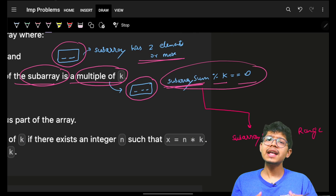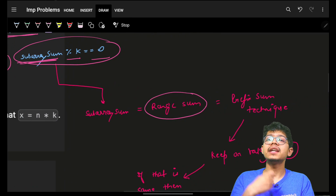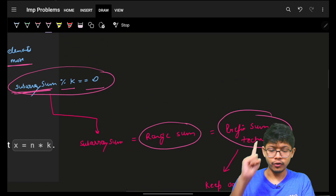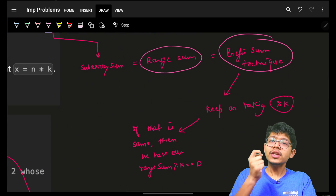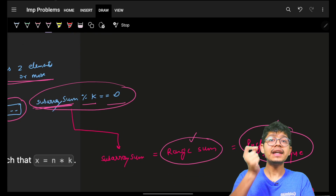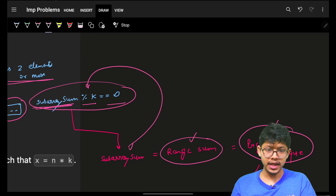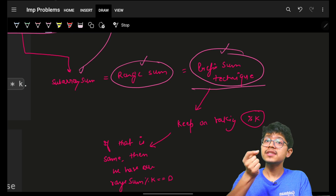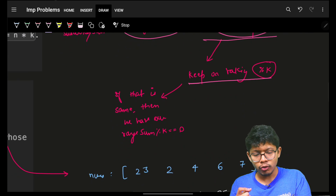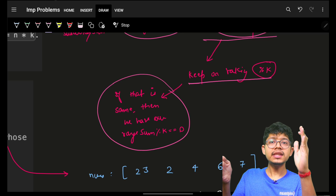How can I find the subarray sum in as little time as possible? I can find range sums when there is no update very fast by using the prefix sum technique. If you don't know this, go watch the linked video. Coming back — if we apply prefix sums, we can easily find the range sum, and thus the subarray sum mod k. Just keep applying mod k to your prefix sums as you build them.